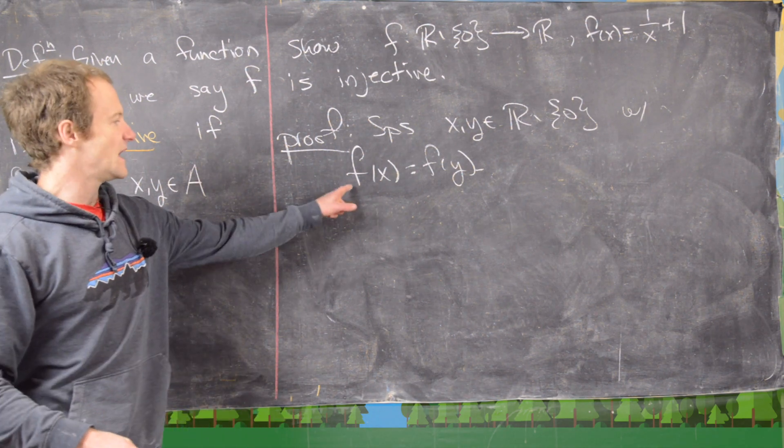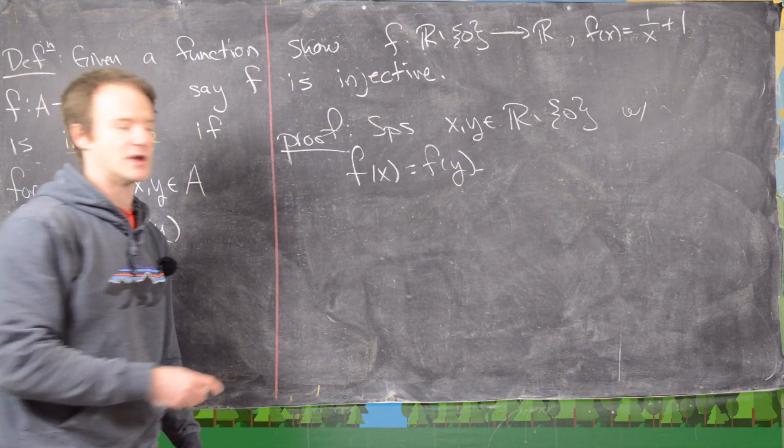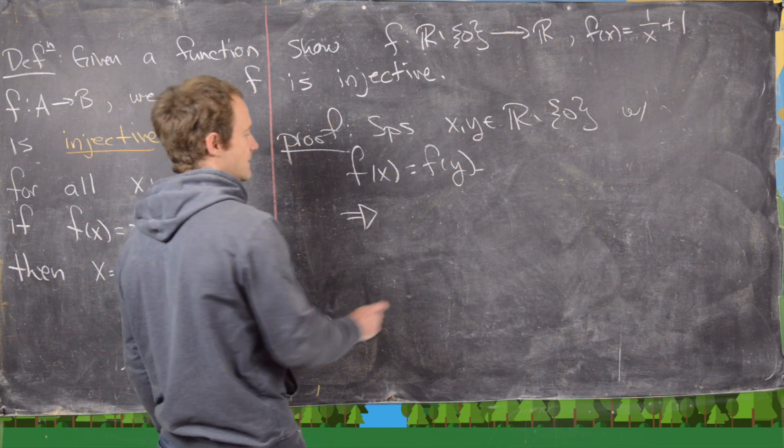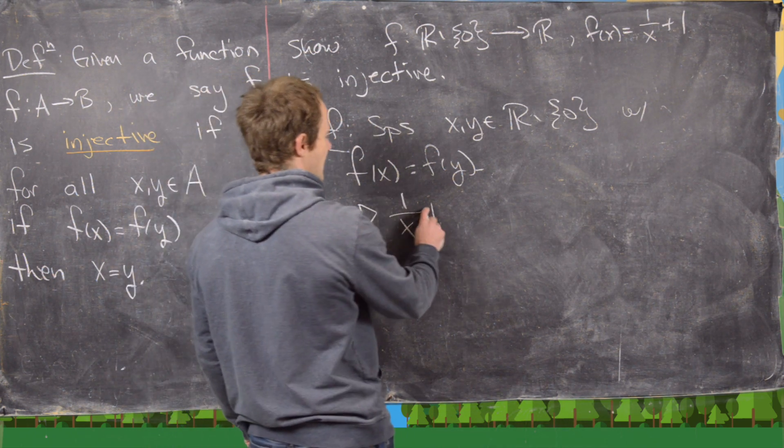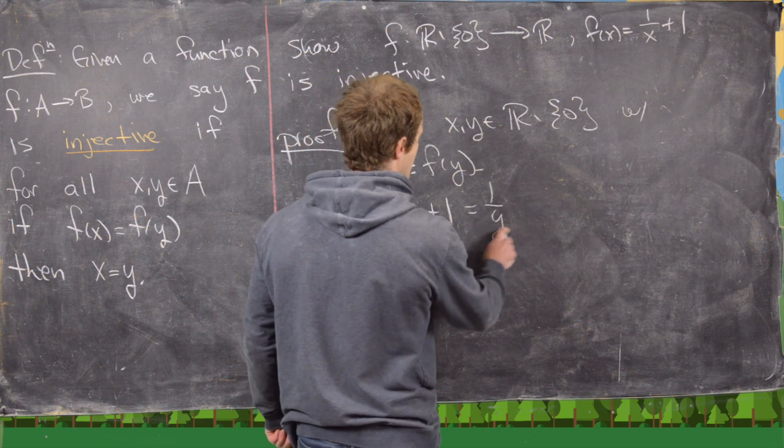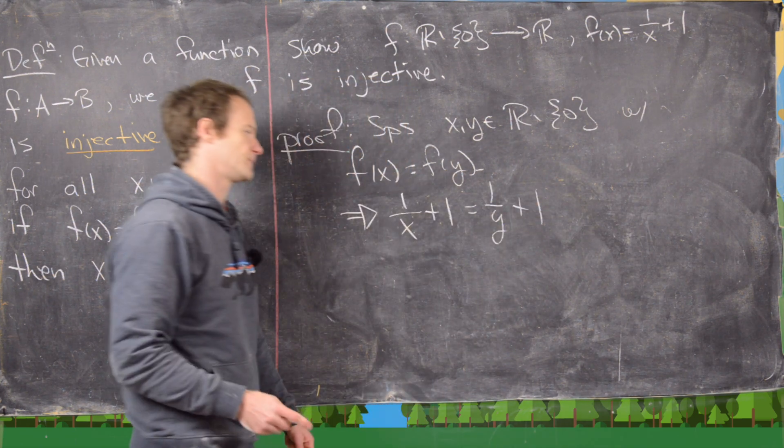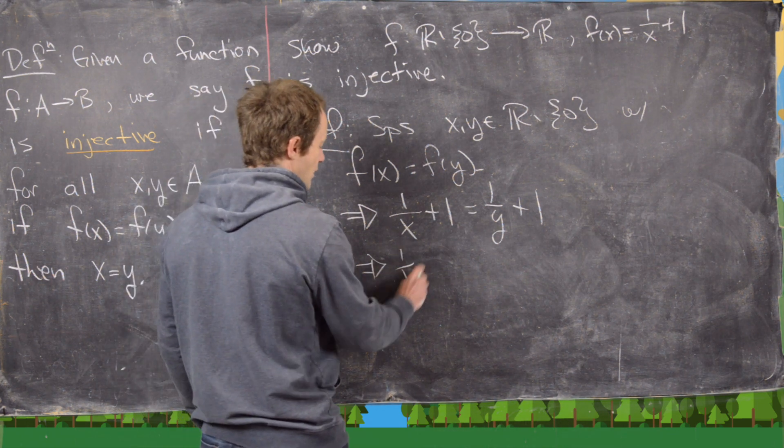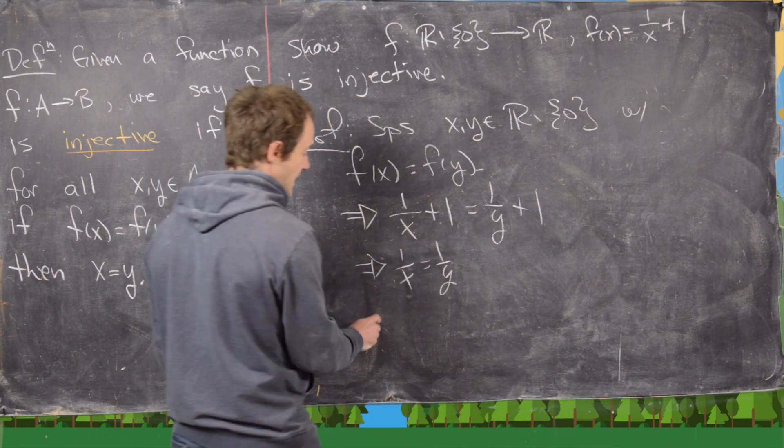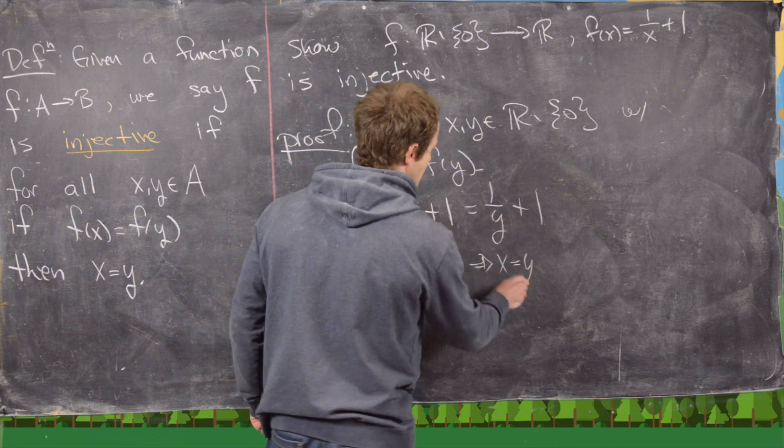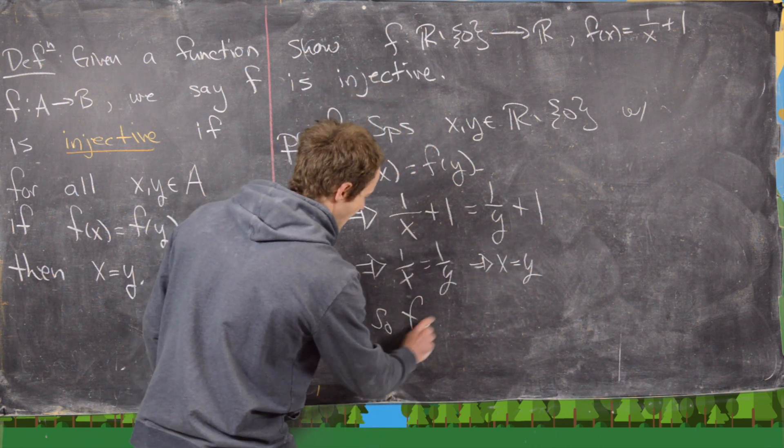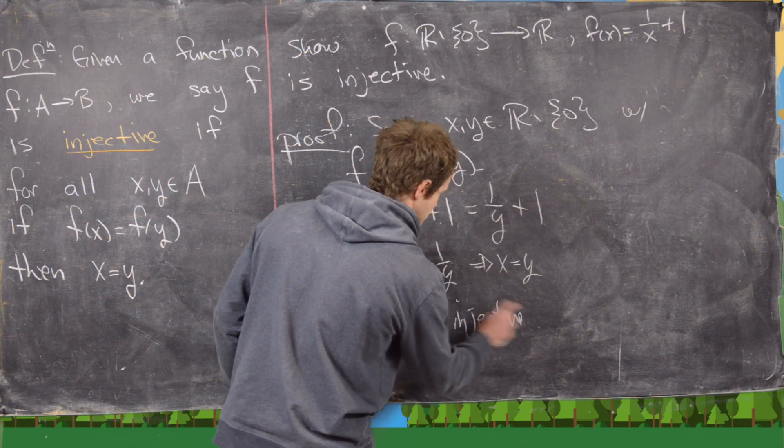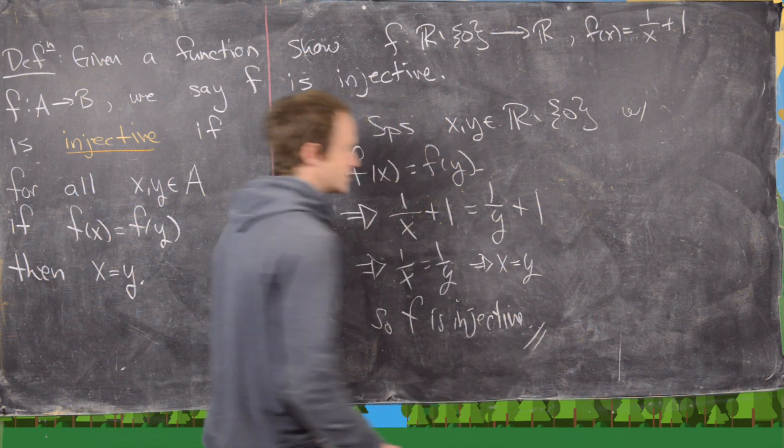But then we can apply our formula that we know for f of x equals f of y. So what that tells us is that 1 over x plus 1 equals 1 over y plus 1. But then that immediately follows that 1 over x equals 1 over y, but then also that follows that x equals y, so f is injective. And that finishes our proof.